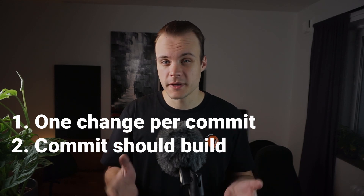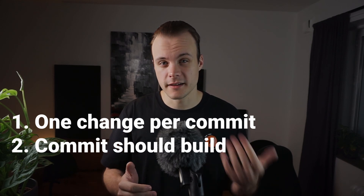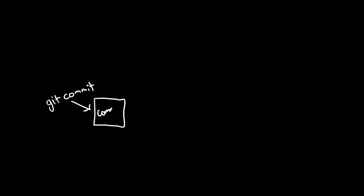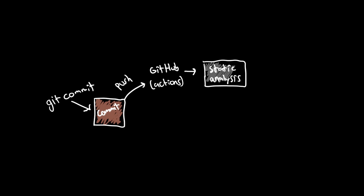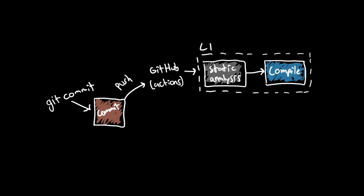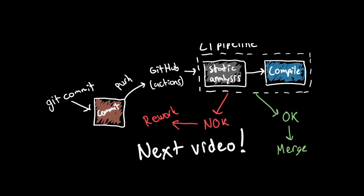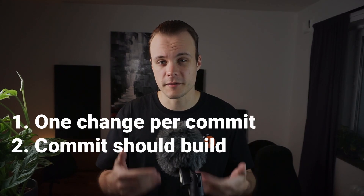Secondly, each commit should build and possibly pass any static analysis. What I mean by this is that after I make a commit, I should be able to run make without getting any compiler errors. I'm actually going to enforce this by setting up a small CI system using GitHub Actions. But I haven't actually set this up yet, so I will talk more about continuous integration in my next video when I've set everything up.